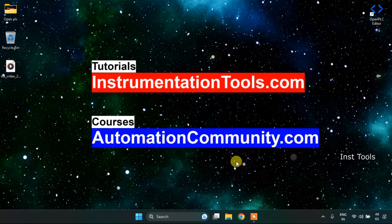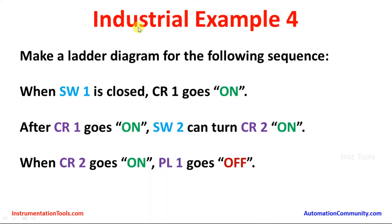We are going to see an example — Industrial Example 4. Make a ladder diagram for the following sequence: when SW1 is closed, CR1 goes on. After CR1 goes on, SW2 can turn CR2 on. When CR2 goes on, PL1 goes off.